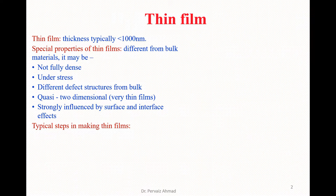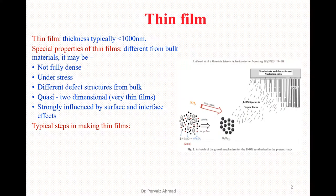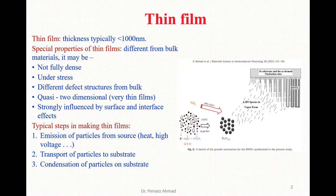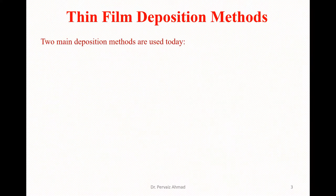There are some general steps in making a thin film. First, we have emission of particles from the source, which is normally done by heating the source material — heating can be performed by applying a high voltage. After emission, we have transport of the particles to the surface, and then condensation of the particles on the surface.